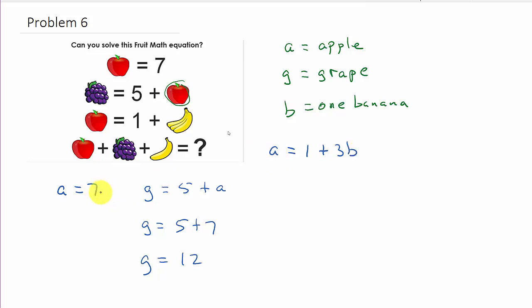So now, let's plug in what we know, and we can solve for B. So, A is 7, so that's going to be 7 equals 1 plus 3B. And then, I just solve this. So, if you remember how to solve equations, we're going to subtract 1 from both sides. So, that's going to give us 6 equals 3B.